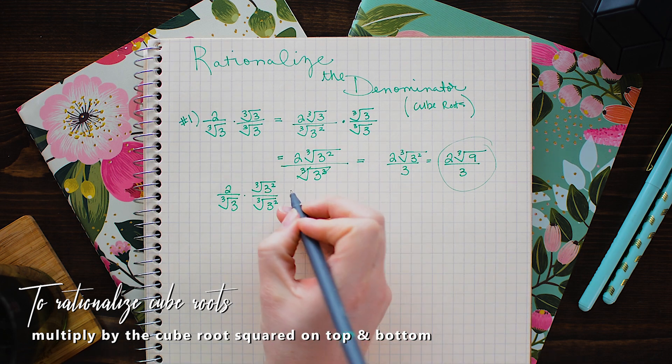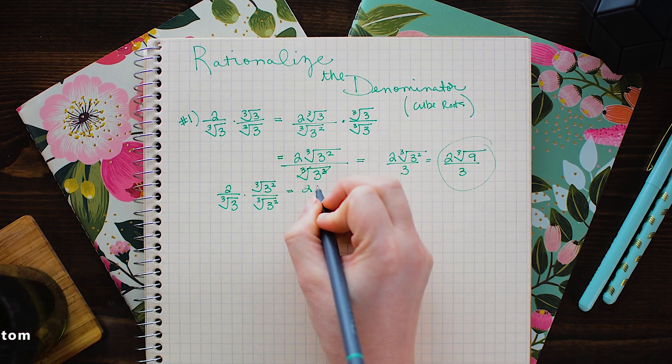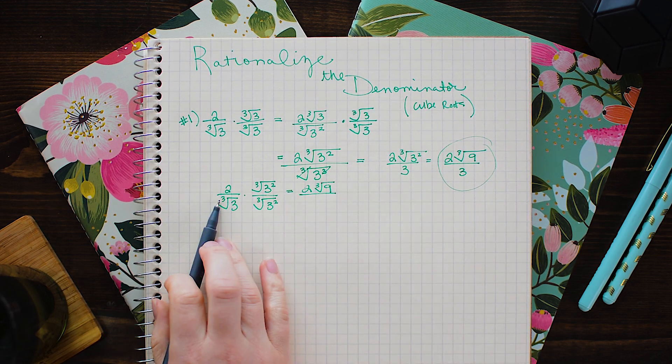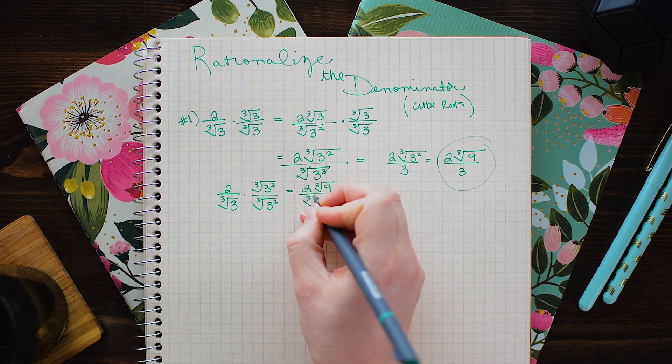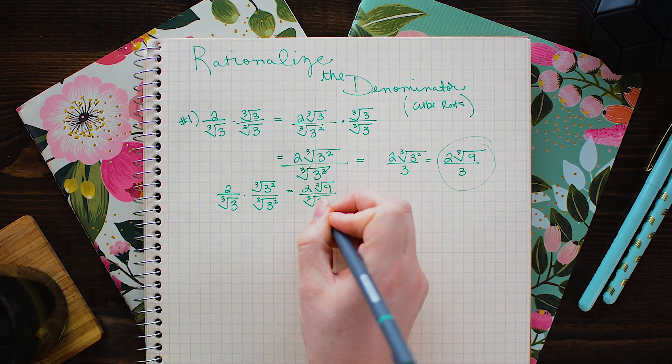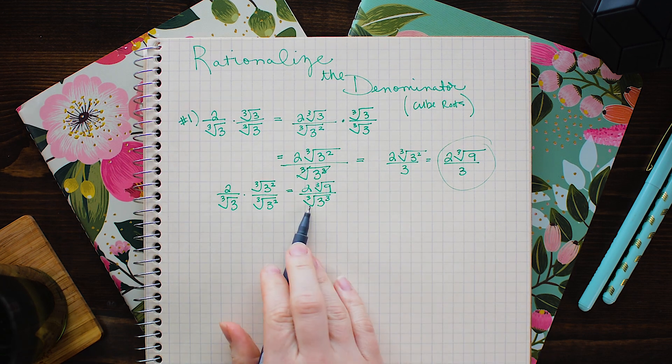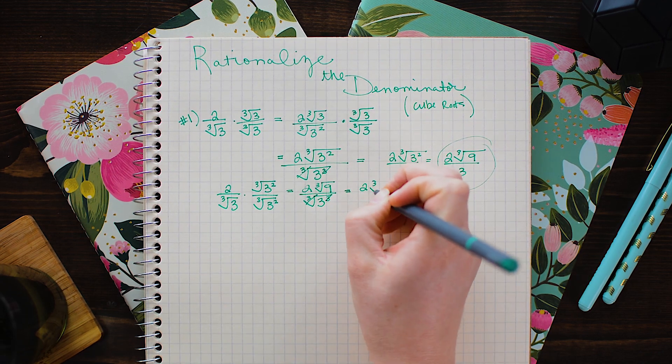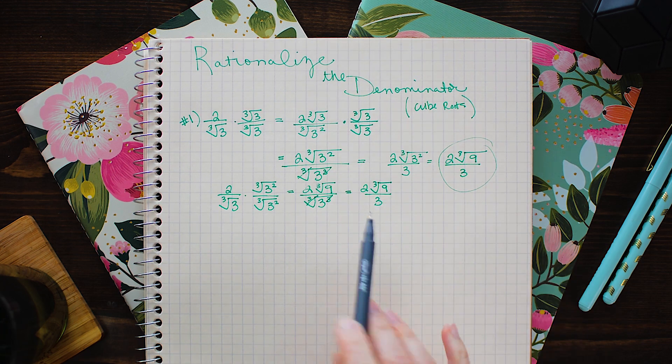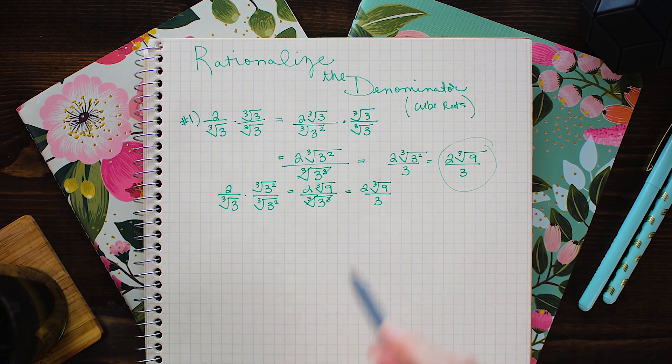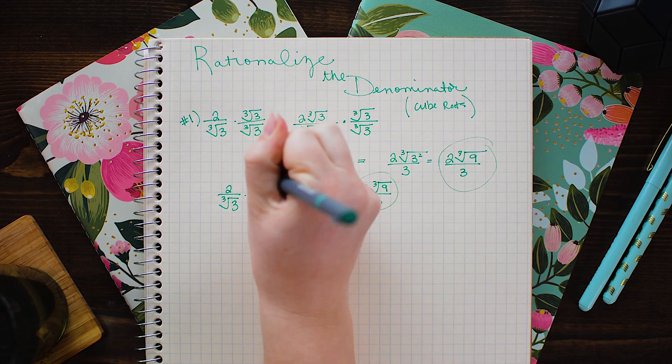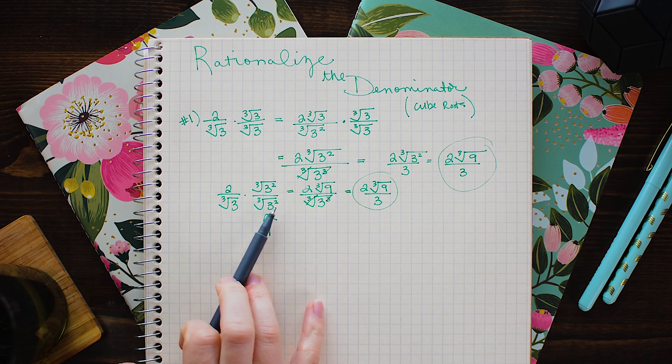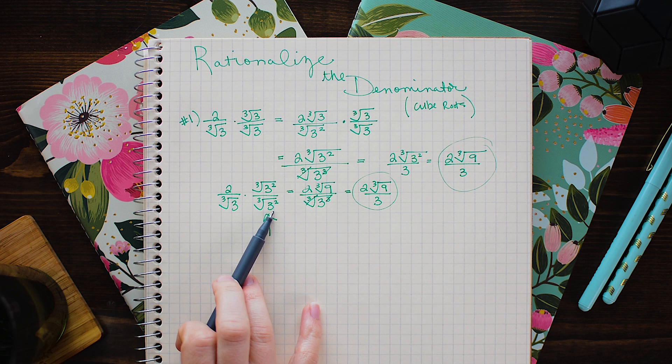Now when I multiply these together I get 2 cube root of 3 squared or 9 over the cube root of 3 cubed. And now we know that the cube root of 3 cubed is simply 3. So that is 2 cube root of 9 over 3. So this is the key right here is multiplying by the cube root of whatever number you have inside squared.